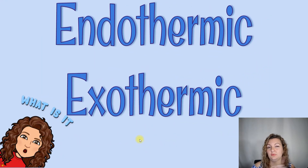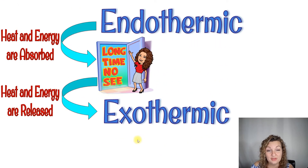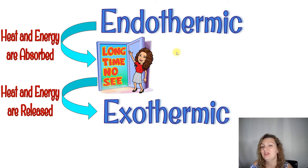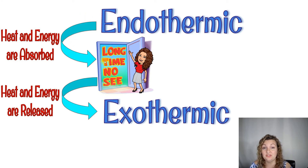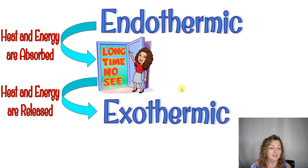Endothermic and exothermic — do you remember which is which? Endothermic: the heat and energy come into the system, so we're adding or absorbing heat into our system. Exothermic: it's going out the exit — heat and energy are leaving and being released from the system.